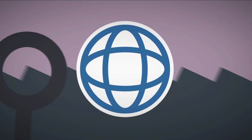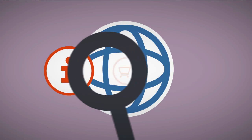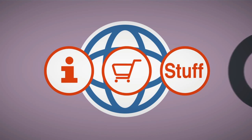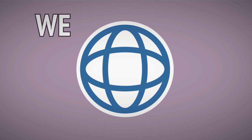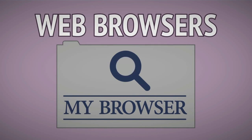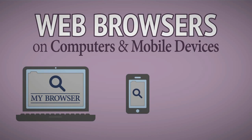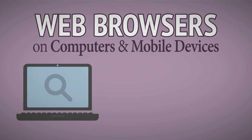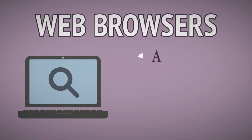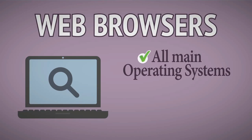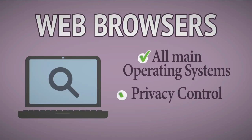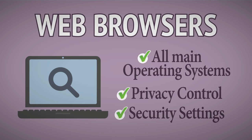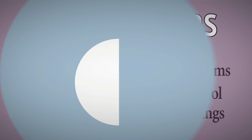Searching the web for information, products, and a multitude of other things is made easier by the web browser we choose for our computers, mobile, and connected devices. Web browsers are available for all mainstream operating systems and increasingly offer a good level of control over the privacy and security settings we prefer when we're online.